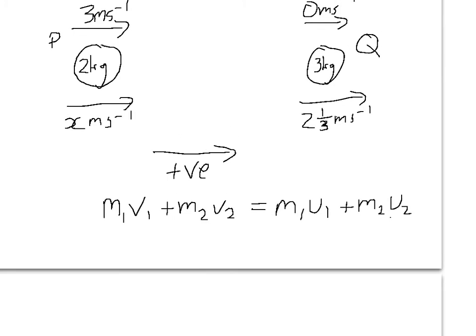So the final velocity of P, which we're going to use P as being 1 and Q as being 2. So the mass is 2 and its final velocity is what we don't know. So that's x.